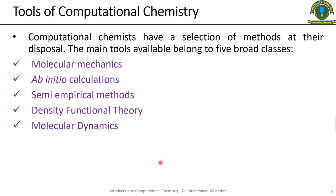We have a selection of methods and tools available belonging to five broad classes. The first and most simple is molecular mechanics, then ab initio calculations, semi-empirical methods, density functional theory, and molecular dynamics. These are the five broad classes of computational chemistry methods.